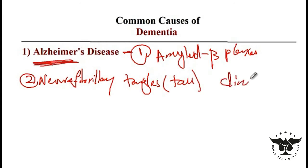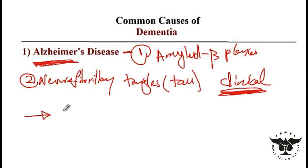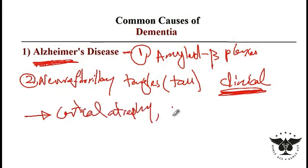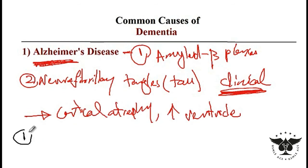Generally, the diagnosis for Alzheimer's disease is clinical — same with Parkinson's — but you can strengthen the diagnosis by reviewing the MRI of these patients. An MRI will generally show cortical atrophy as well as enlargement of the brain ventricles. Common risk factors for the development of Alzheimer's disease include age and Down syndrome.